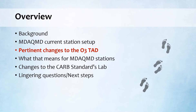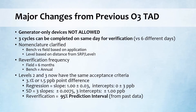Next I'll discuss pertinent changes to the Ozone TAD. Here in a nutshell is a list of the major changes for the 2020 Ozone TAD compared to the previous 2013 version. The biggest one for our district is that generator-only devices will no longer be allowed for use as a transfer standard. On the upside, for the initial verification, three cycles can be completed all in the same day, whereas previously six different cycles were required on six different days. So that should make things easier.